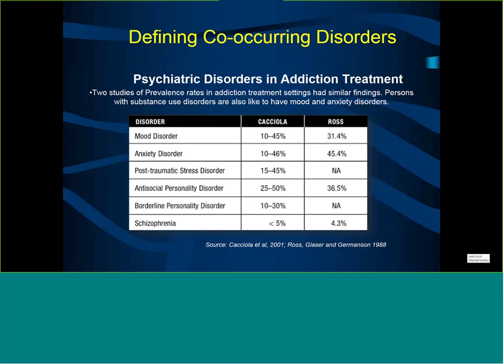Schizophrenia is associated with particularly high prevalence of cannabis use disorder. Even if the cannabis use is not at severe levels, it can affect the course of schizophrenia and the course of treatment. People with schizophrenia can be more resistant to treatment if they are actively using any substances, particularly cannabis, even if it does not rise to the level of a full-blown severe substance use disorder.